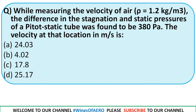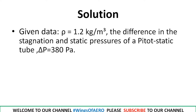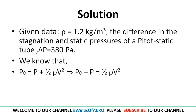While measuring the velocity of air — density ρ = 1.2 kg/m³ — the difference in stagnation and static pressures from a pitot-static tube was found to be 380 Pa. What is the velocity at that location? Recalling the formula: P₀ = P + ½ρV², so ΔP = P₀ − P = ½ρV².